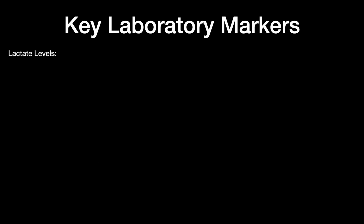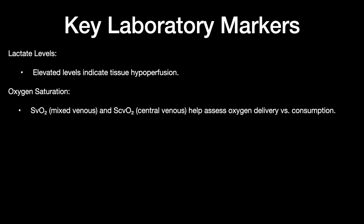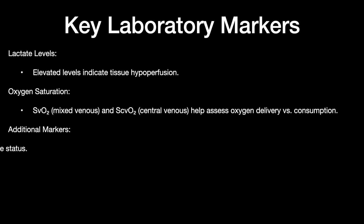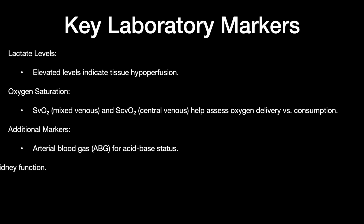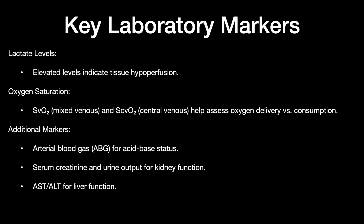Key lab markers include lactate levels — elevated lactate indicates tissue hypoperfusion. Oxygen saturations, specifically SvO2 mixed venous and central venous oxygen saturations, help assess oxygen delivery and consumption. Additional markers include ABG, base excess, creatinine, urine output, AST/ALT for liver function, NT-proBNP, and troponins for heart failure and myocardial injury.